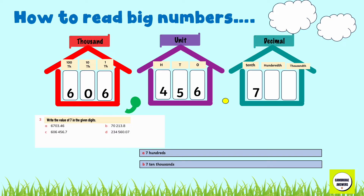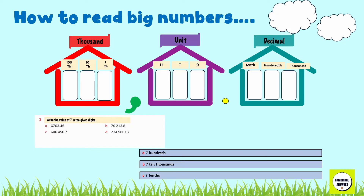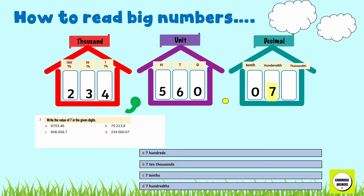In 606,456.7, the value of seven is seven tenths. In 234,560.07, the value of seven is seven hundredths.